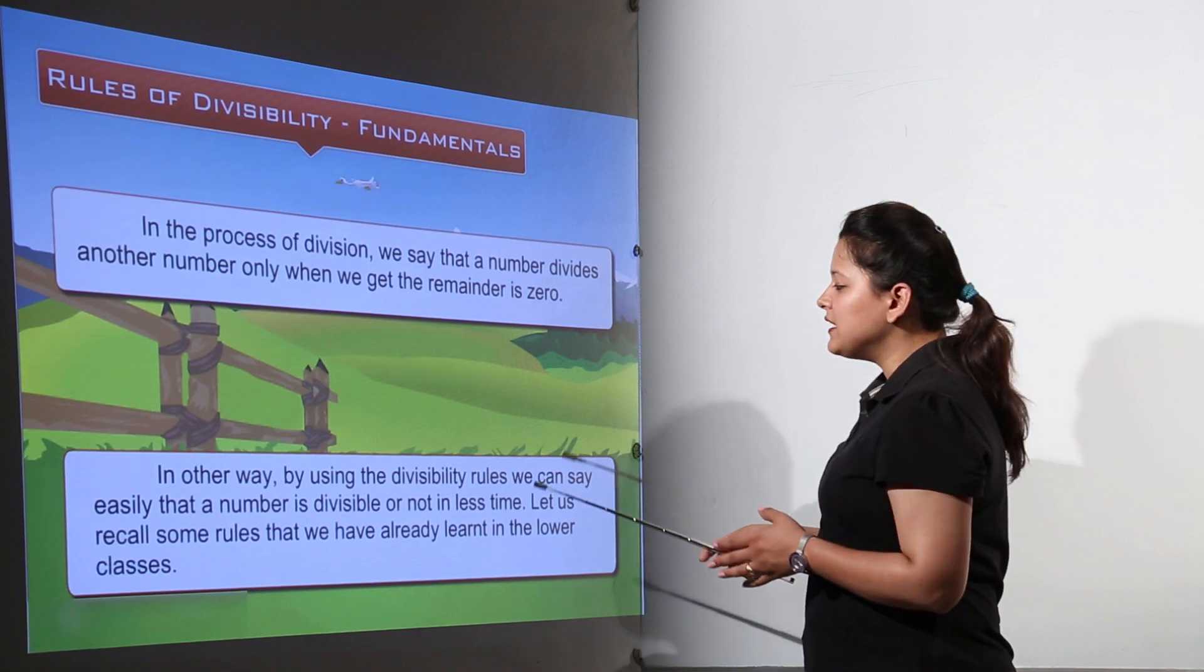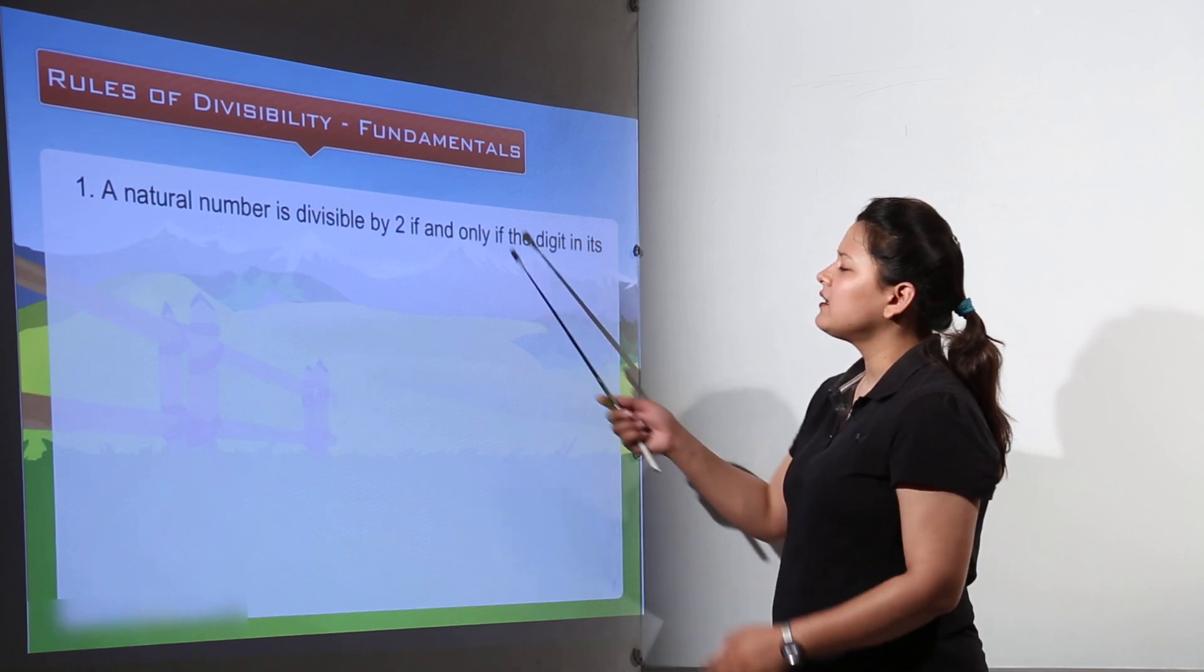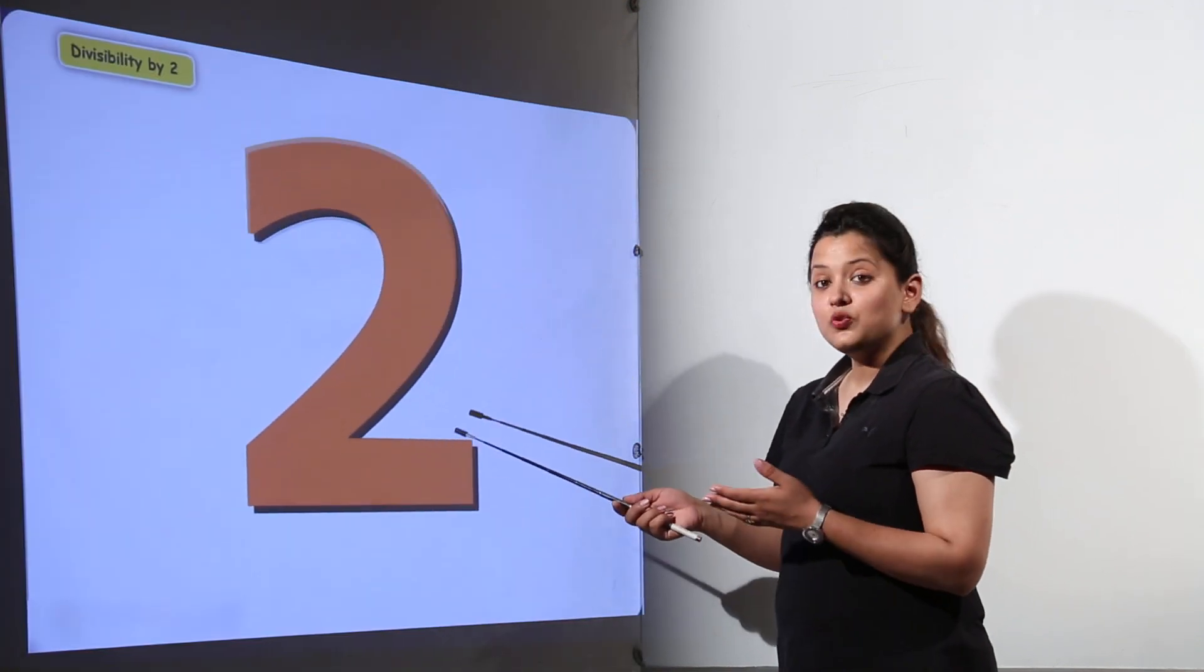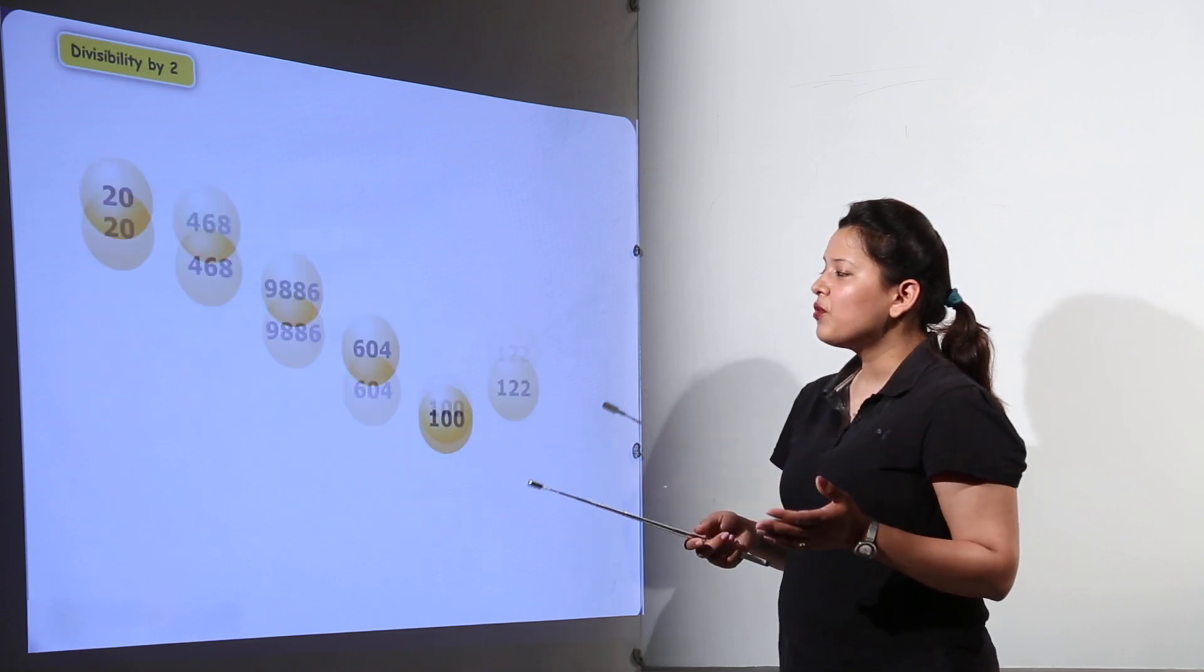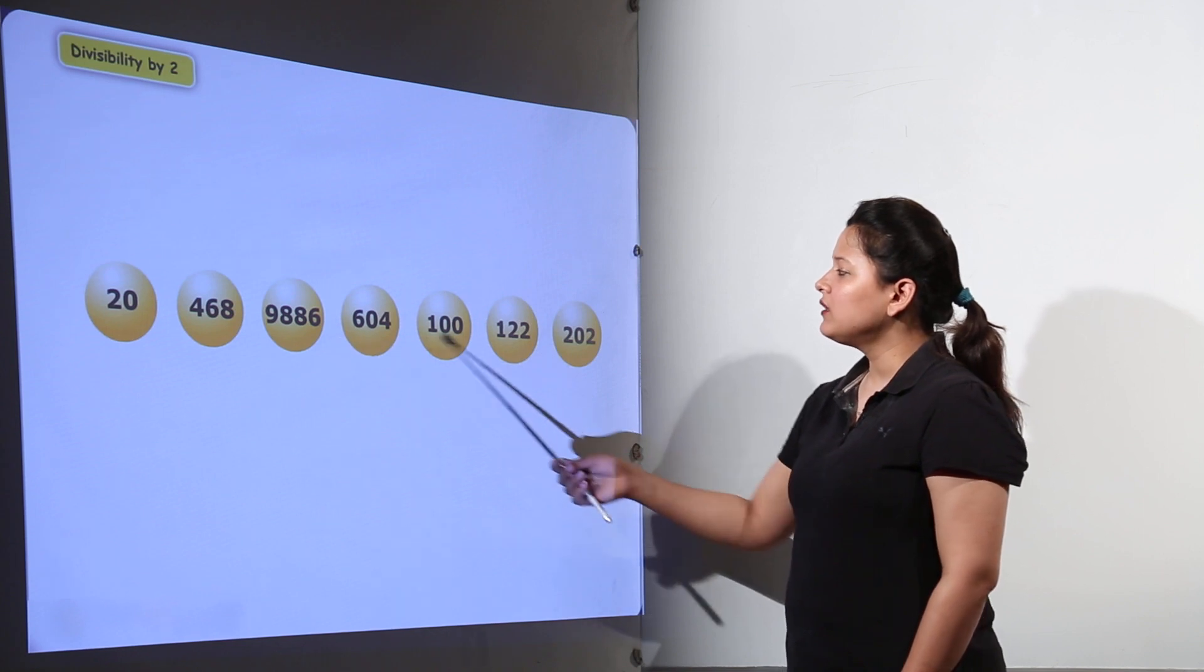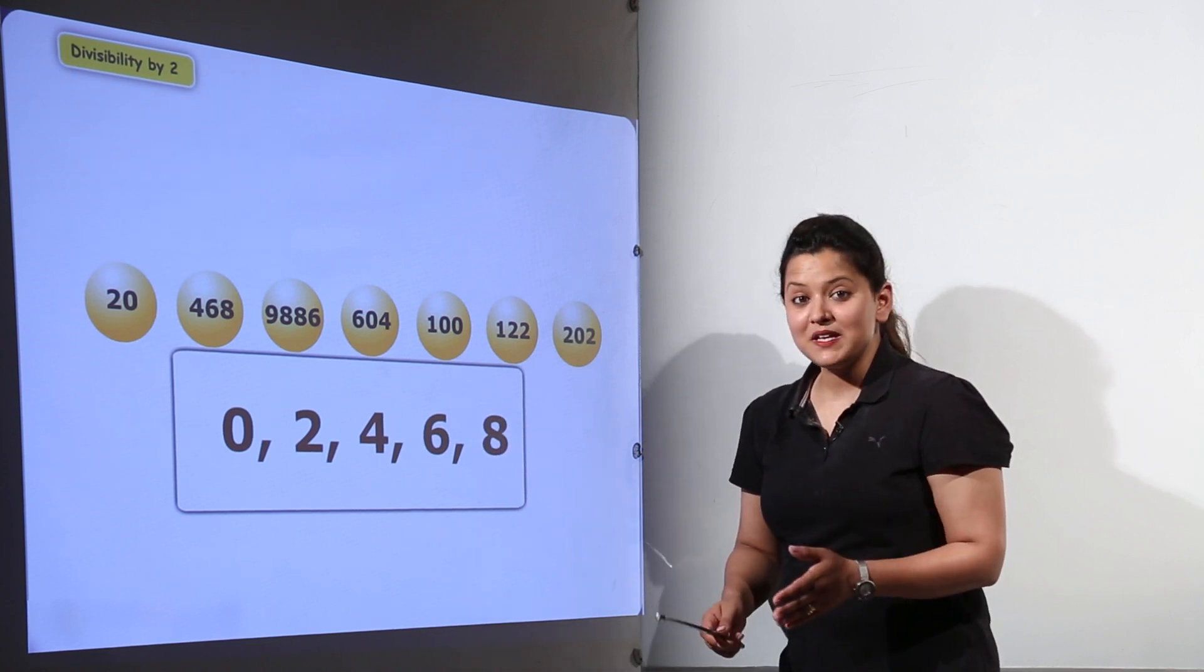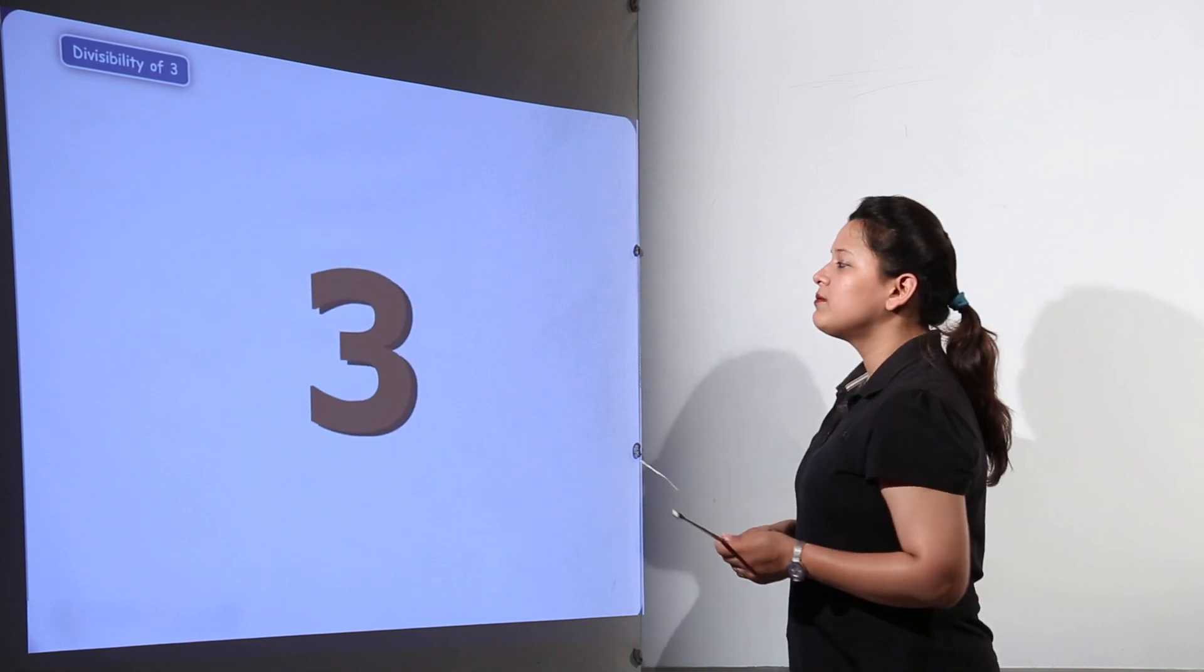You must have seen that in previous classes we're taught little tricks. Some of the tricks: a natural number is divisible by 2 if and only if the digit at the units place is 2, 4, 6, 8, or 0. So here, all the numbers have the units place as 2, 0, 4, 6, or 8. If the units place is divisible by 2, that means the whole number will be divisible by 2.